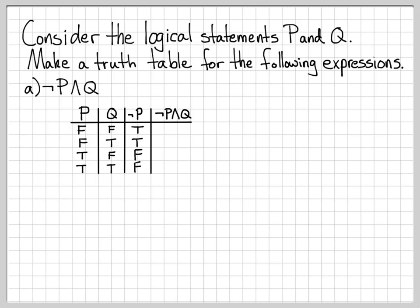To fill in this last column, I just need to look at the row I'm working on and take the AND of 'not P' and Q. For the first row, F and T is false because both have to be true. For the next row, T and T gives true. Then false and false is false. And true and false is false. So we now have a truth table for this logical expression.